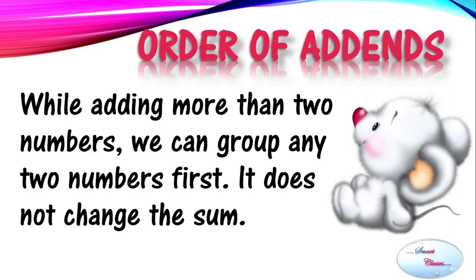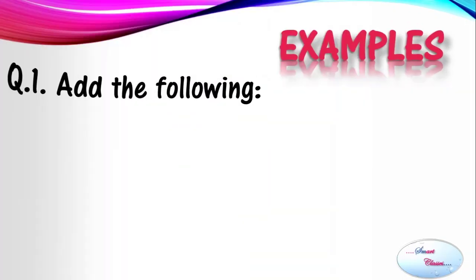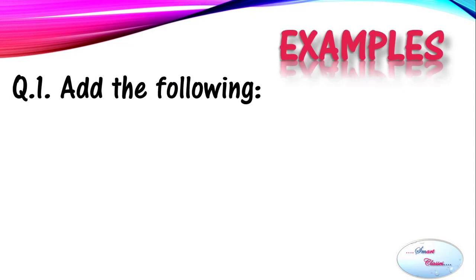Now let's see some examples. Here we have to add two numbers: 231 and 114. As we have already studied, small numbers can be added mentally by using the horizontal method. Here we have to add 231 plus 114, so when we are adding it horizontally...